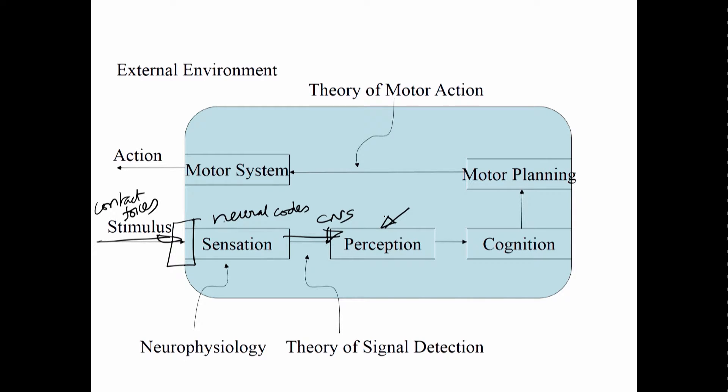Then we have the perception and the perception leads to cognition. Once we have the cognition we do the motor planning, and once we do the motor planning we ask the motor system to move it. The motor system moves the hands and then action is on the environment. The same thing as what we have seen in the previous slide.